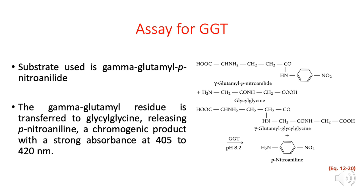How do we assay for GGT in the laboratory? The substrate is gamma glutamyl paranitroaniline. In the presence of GGT, the gamma glutamyl is transferred to glycylglycine, liberating paranitroaniline. When bound to gamma glutamyl it is called paranitroaniline, but once liberated it is converted to paranitroaniline, which can absorb light at 400 to 450 nanometers. The higher the GGT in the sample, the higher the production of paranitroaniline and the higher the absorbance at 400 to 420 nanometers.